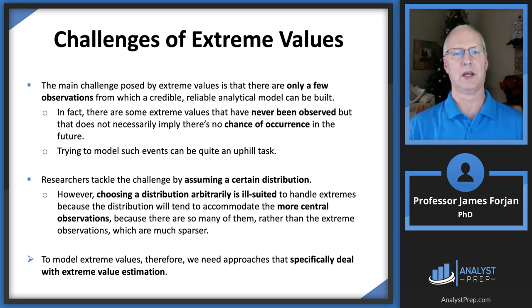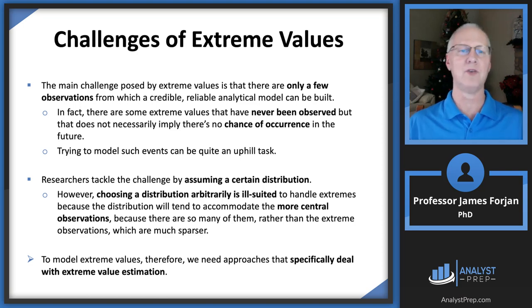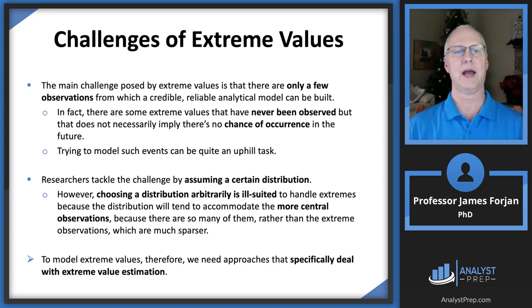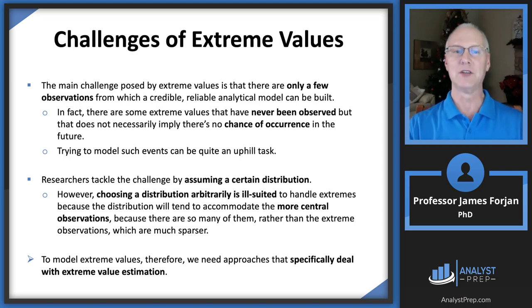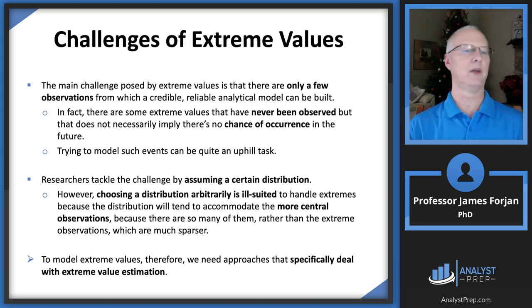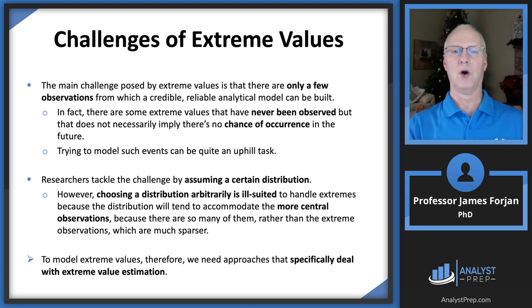The main challenge posed by extreme values goes back to the NFL field goal example. Of roughly 960 attempts in 2017, only six were from 60 yards and beyond — very few observations. This inhibits our ability to extract valuable information from the data. Also, just because nobody has ever kicked a 71-yard field goal doesn't mean there's a zero chance of it occurring. The problem is modeling an event that has never been observed.